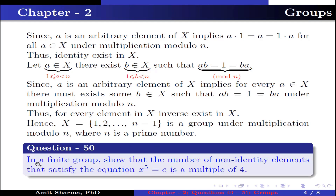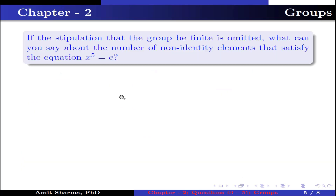Question number 50: In a finite group, show that the number of non-identity elements that satisfy the equation x^5 = e is a multiple of 4. If the stipulation that the group be finite is omitted, what can you say about the number of non-identity elements that satisfy the equation x^5 = e?